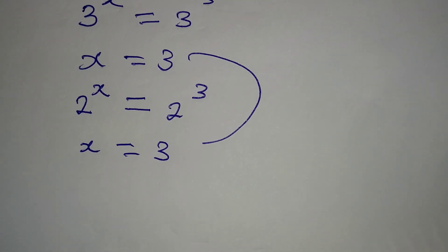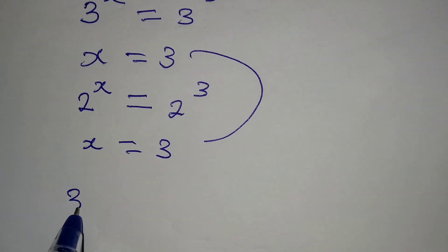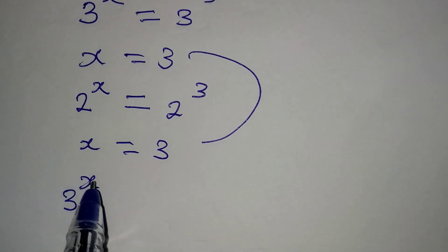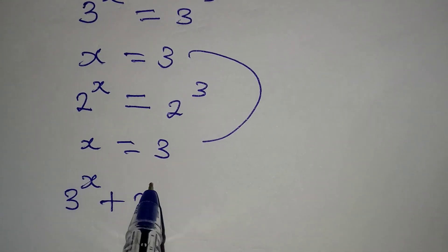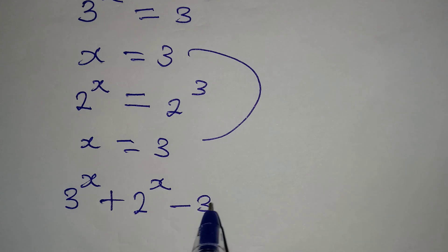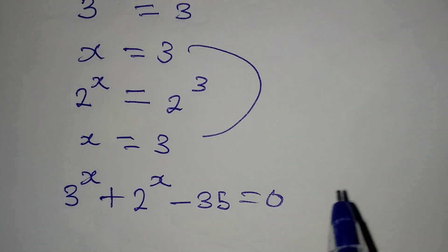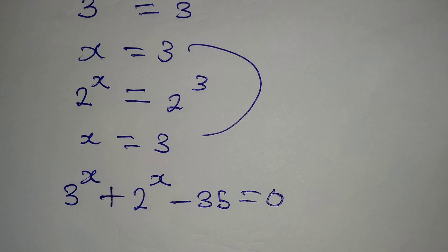Going back to the original equation, we have x = 3. So we substitute: 3^3 + 2^3...